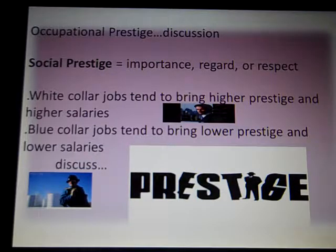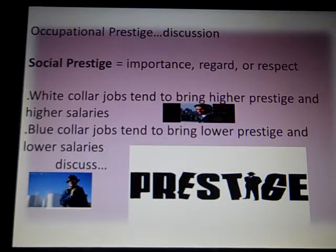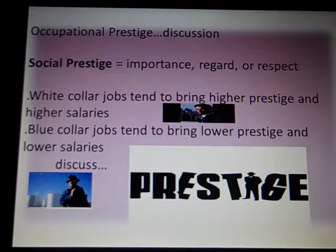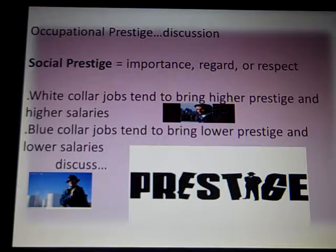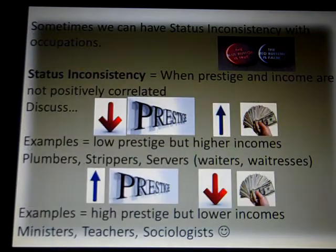White-collar jobs tend to command higher incomes, and people in our society tend to think those jobs are more important than blue-collar jobs. Blue-collar jobs — auto mechanics, janitors, sanitary technicians, factory workers — tend to bring lower prestige and lower salaries. We tend to think these jobs aren't as important, so we don't pay people as much as we would doctors and lawyers. That's how social prestige works in terms of occupation in this country.